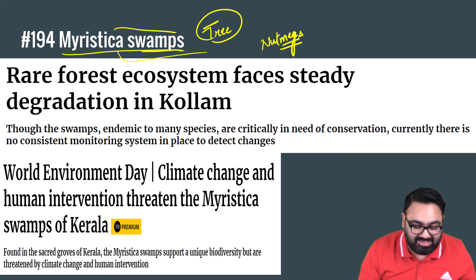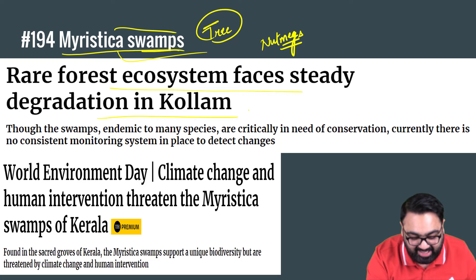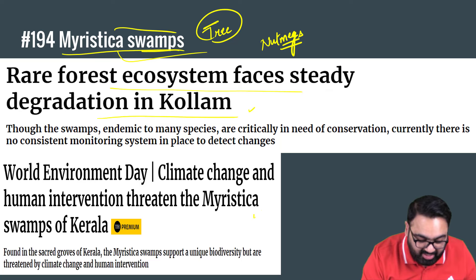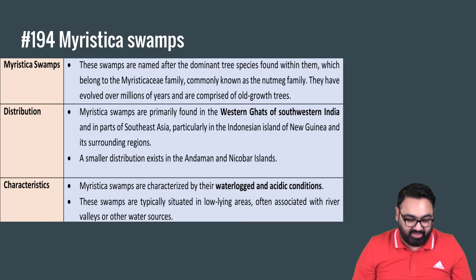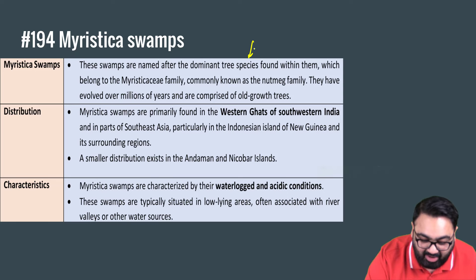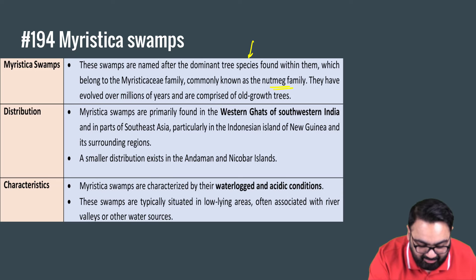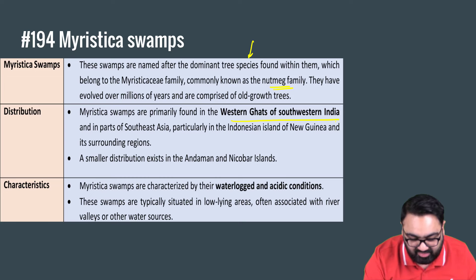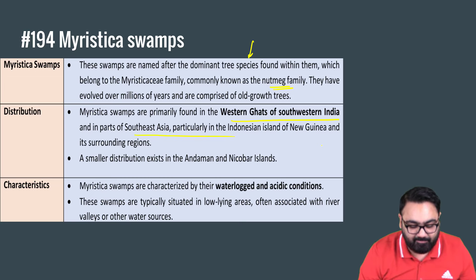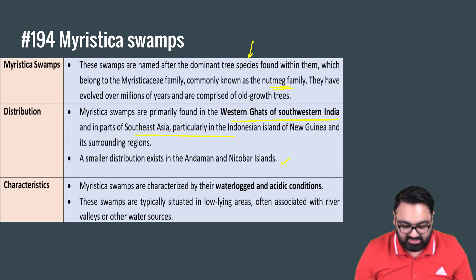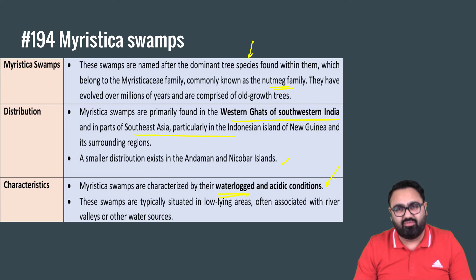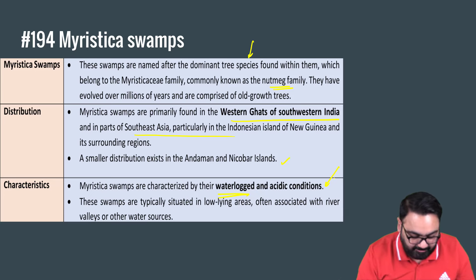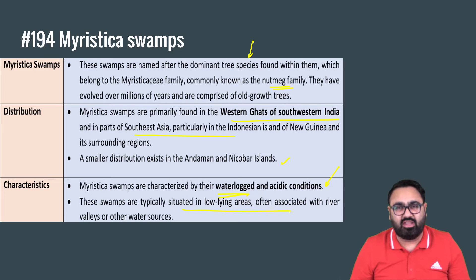Why is it in the news? Because this rare forest ecosystem is seeing a steady decline in Kollam in Kerala, due to human intervention — too much tree cutting and too much human activity in this area along with climate change. These swamps are named after the Myristica tree species, belonging to the nutmeg family. They are usually found in the Western Ghats of southwest India and southeast Asia, and some are also seen in the Andaman and Nicobar Islands. They are characterized by waterlogged and acidic conditions and are situated in low-lying areas, river valleys, or near a water source.